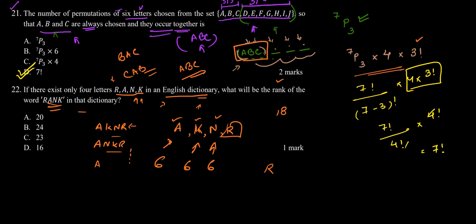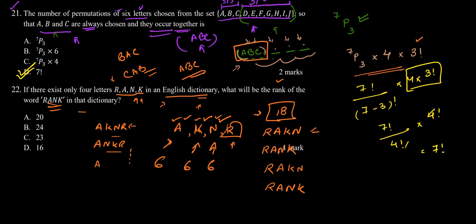After R, the first word starting with R is R, A, K, N because K appears before N in alphabetical order. After 18 words we have the 19th word which is R, A, K, N and the 20th word will be R, A, N, K. So our required word RANK will be the 20th word, meaning the rank of the word RANK in this English dictionary is 20.